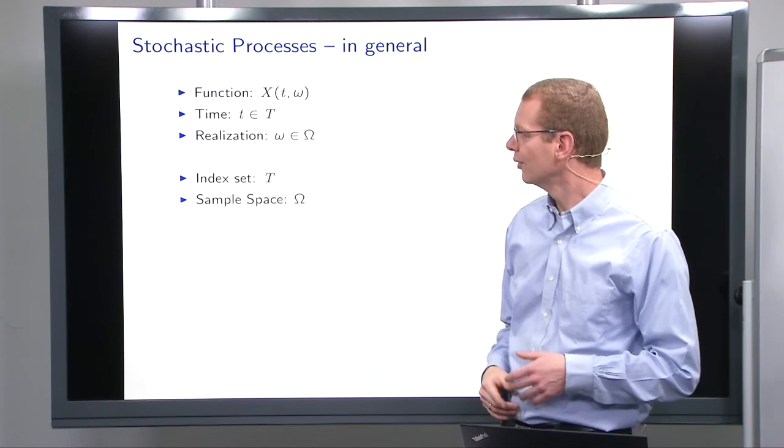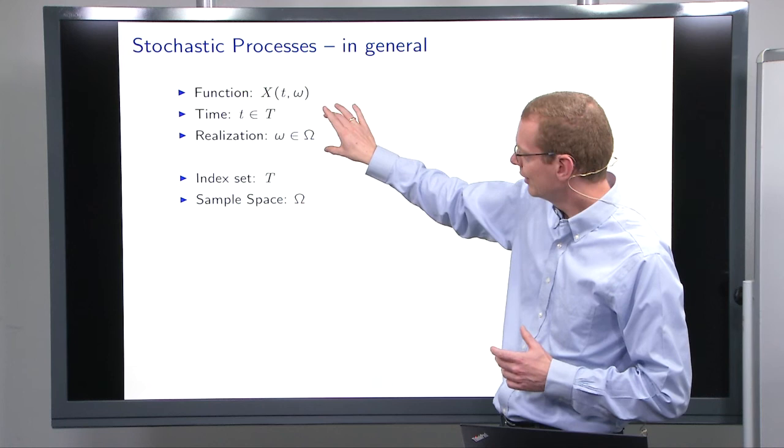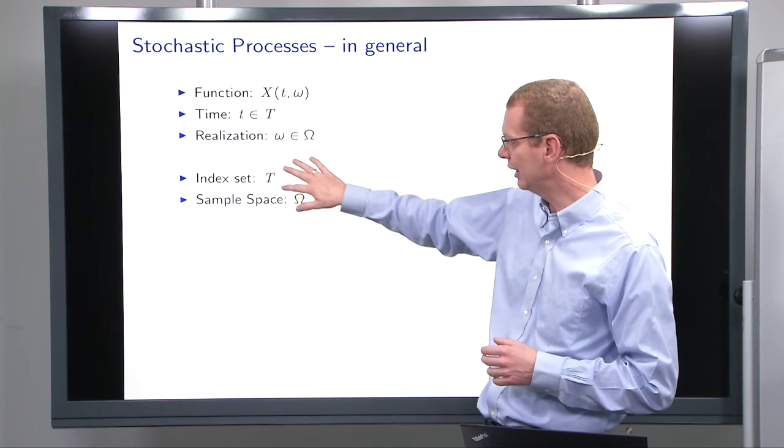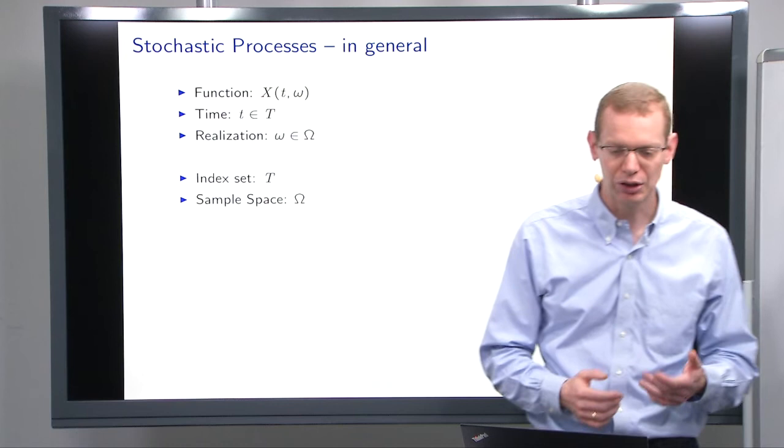And we have some realizations that are also from a particular sample space. So it could be that we have numbers from R. And then this is the realization that we have for this particular observation. So we have an index set for time. And we have a sample space, omega. And that's how we look at it.